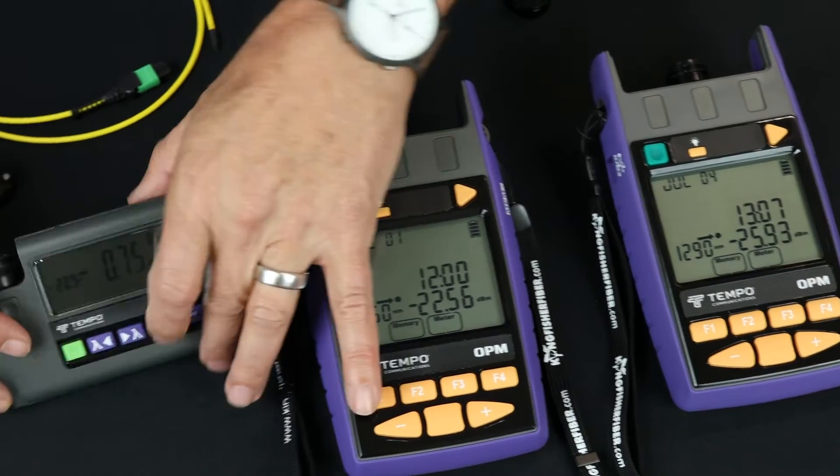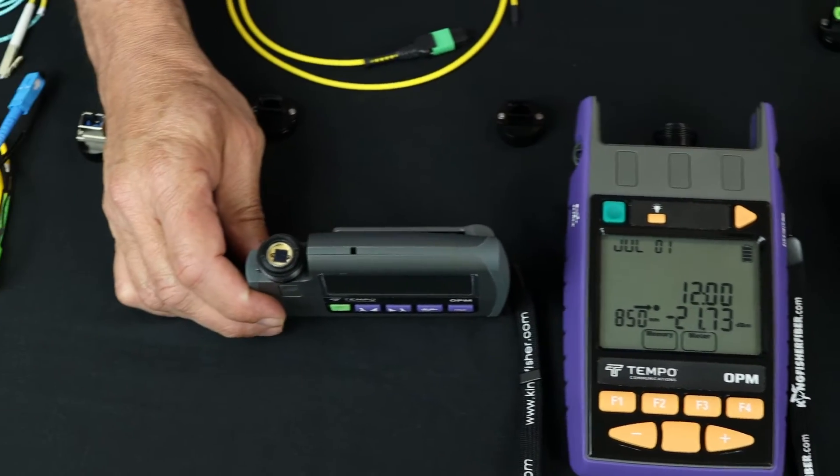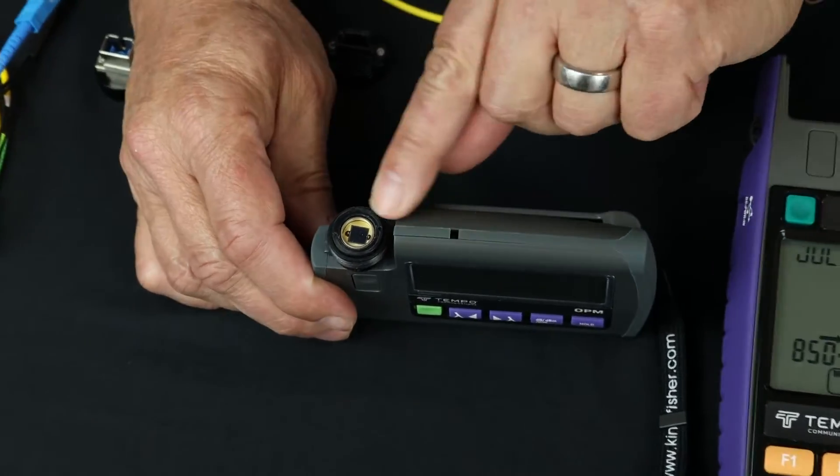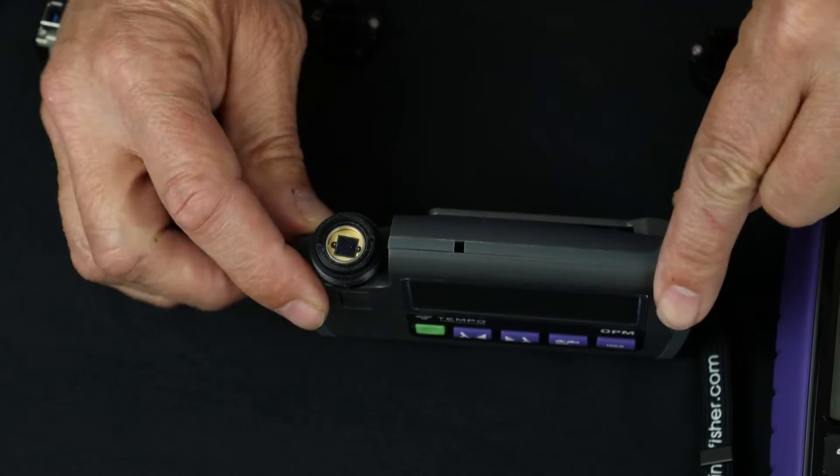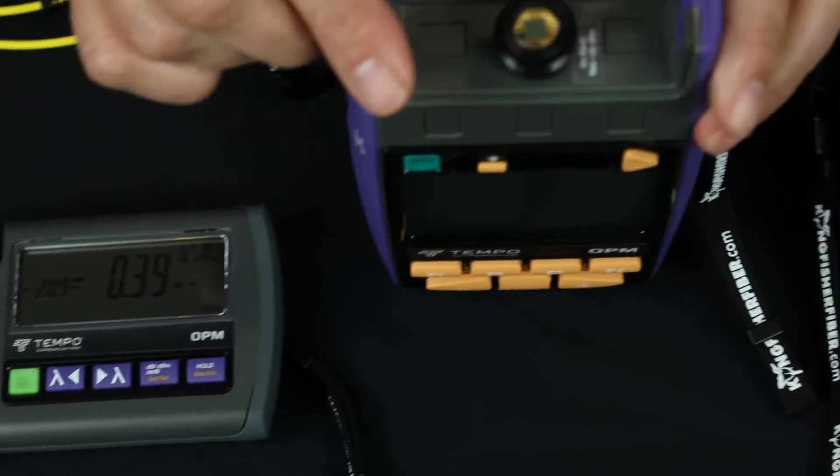The difference here is on this pocket, I have a five millimeter detector, the GE five millimeter detector, and the same is true on this handheld.